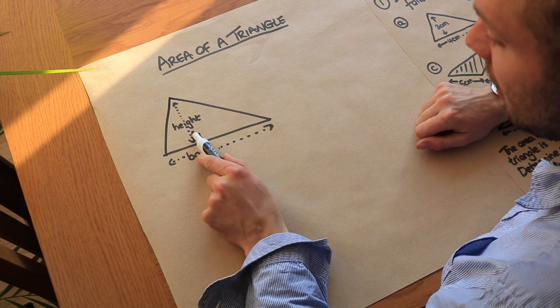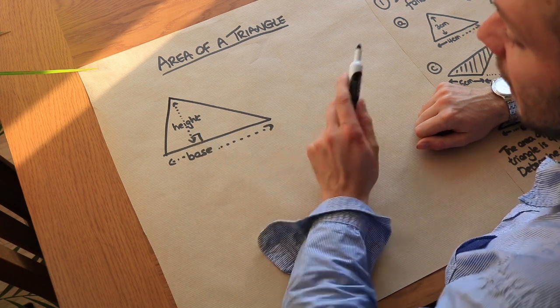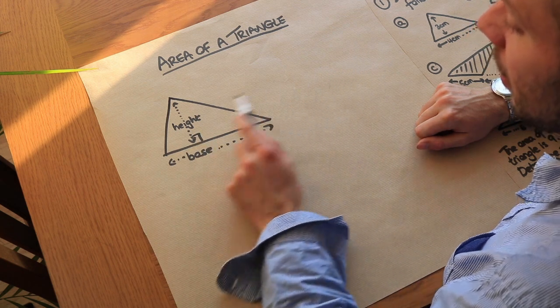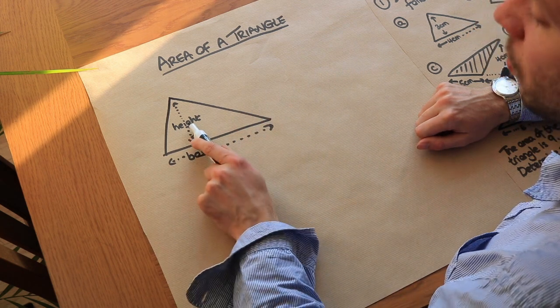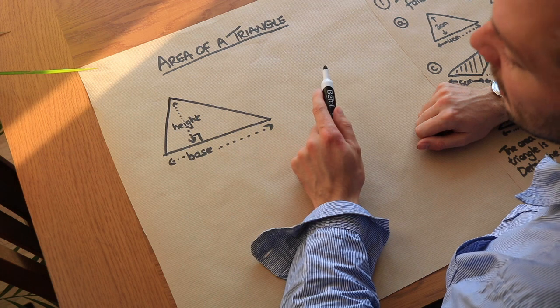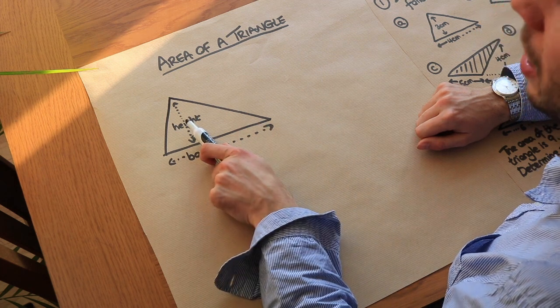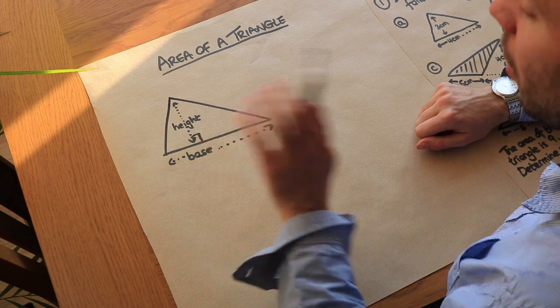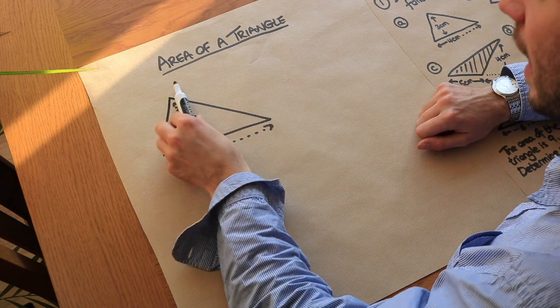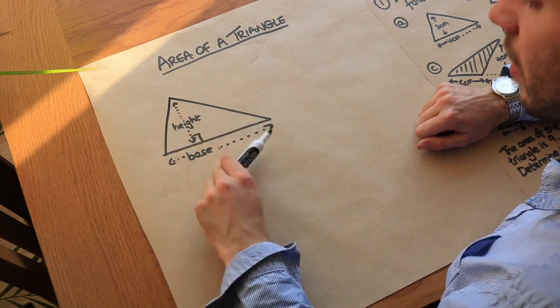We can see there's a right angle here. We often call this the perpendicular height because the height is perpendicular — at right angles — to the base.